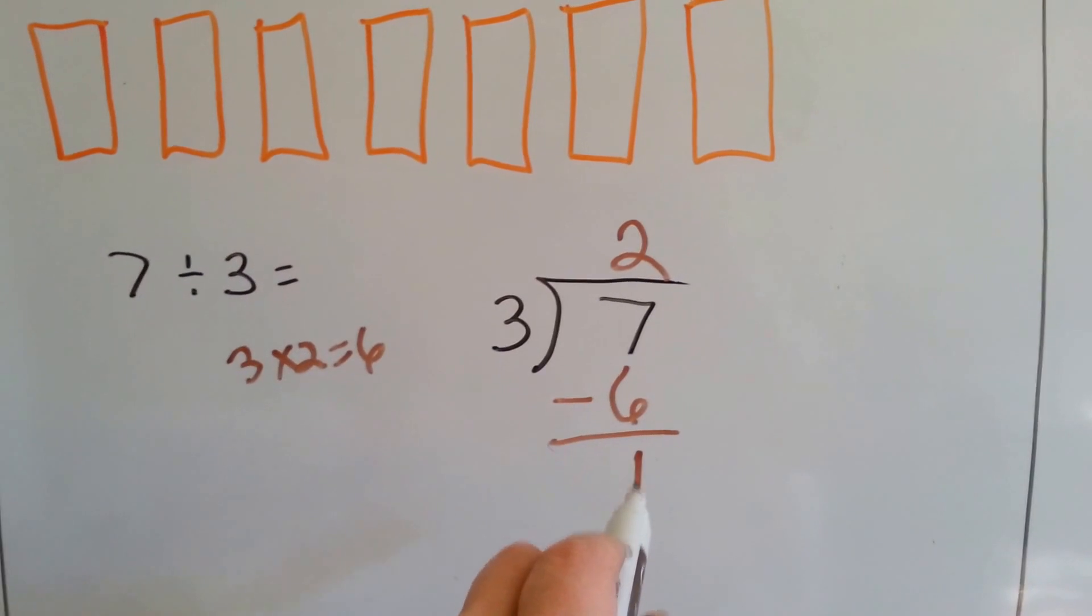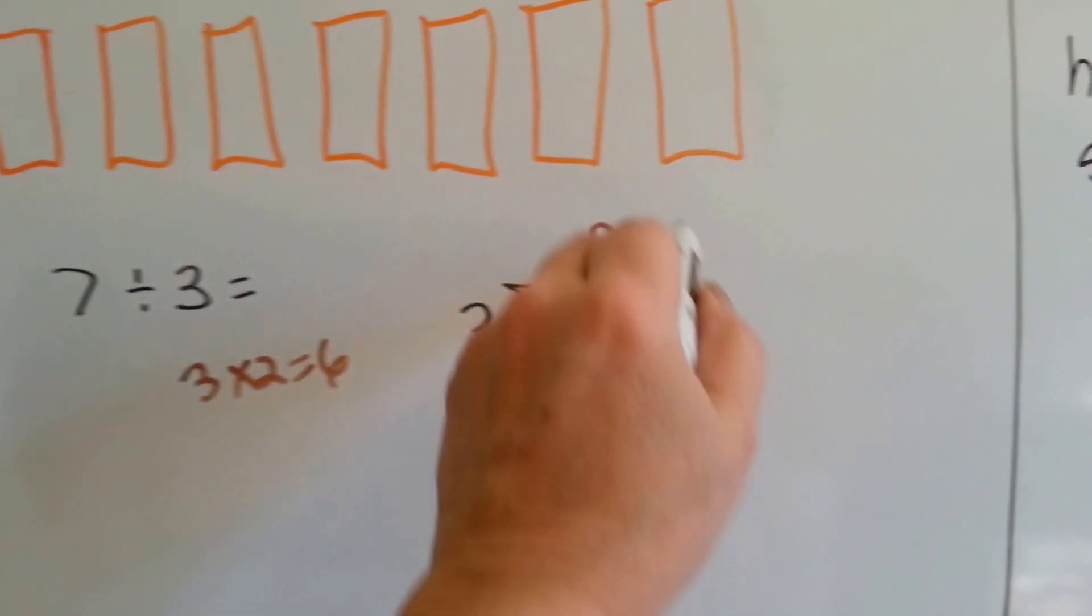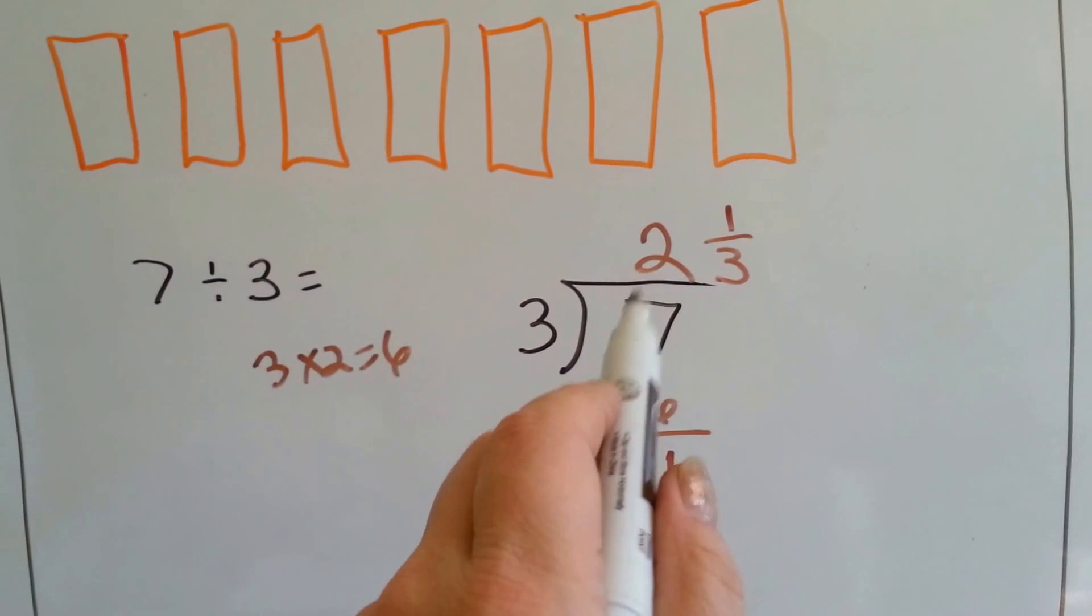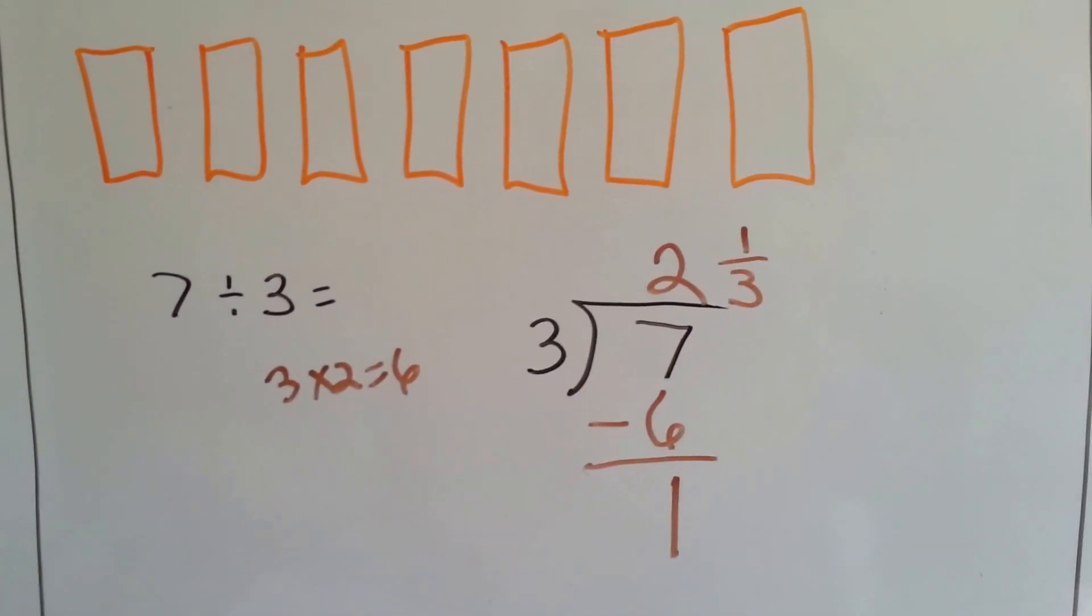Instead of writing remainder one, we put the one on top of the three. That means each person gets two and a third bags of potato chips.